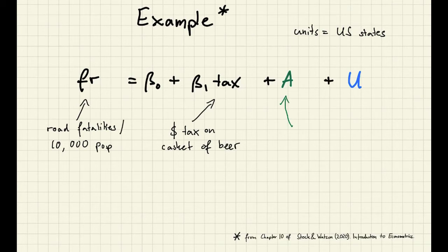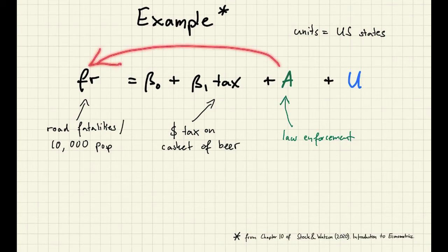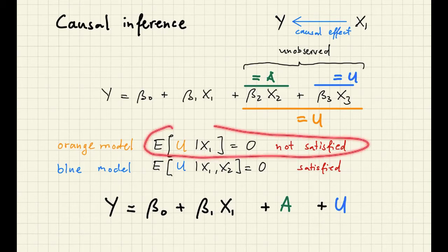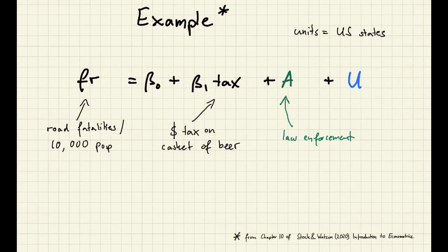Then we have our A and our blue error term. This A could, for example, include a state-specific preference for law enforcement. Clearly, if you have very strong law enforcement, you can maybe bring down the number of road fatalities, so you can see to it that everyone obeys the speed limit and so on. But also, if people like laws, they may be more likely to vote for representatives who implement a beer tax. So there may be a correlation between these two quantities. And this is why it may be problematic to just put the U in a generic error term like we did in this orange model. And that may be a reason why this exogeneity assumption here is not satisfied. Now unfortunately, we are stuck here with a model that we cannot estimate because we don't observe the A, and we don't want to put the A into the error term.